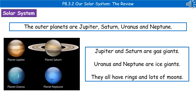The outer planets in our solar system are Jupiter, Saturn, Uranus, and Neptune. Jupiter and Saturn are gas giants, and Uranus and Neptune are ice giants, but all of the outer planets have a lot of moons and they all have rings.